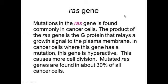There are also two specific mutations found in many cancer cells. The first is the RAS gene. The RAS gene is found mutated in about 30% of all cancer cells. What the RAS gene does is it produces a G protein that relays a growth signal through the plasma membrane into the cell, causing the cell to become hyperactive. More G protein causes more transcription factors, more cell division, and the cell becomes cancerous.